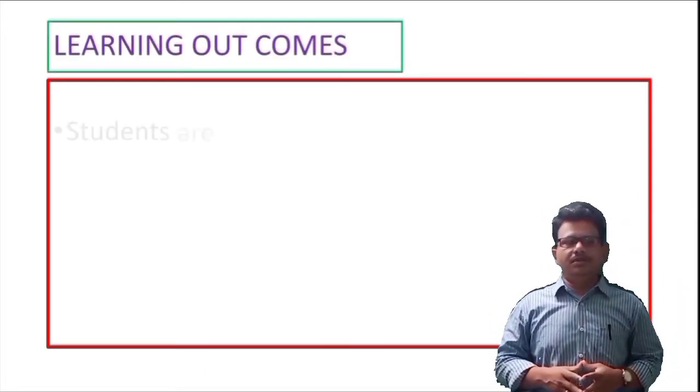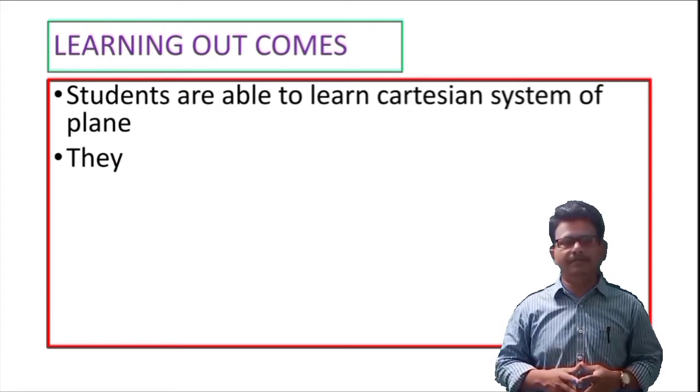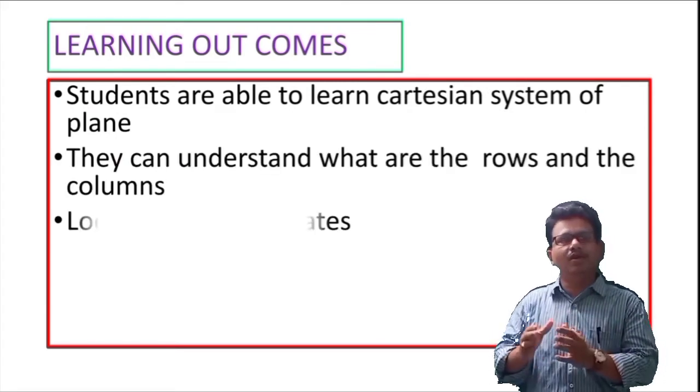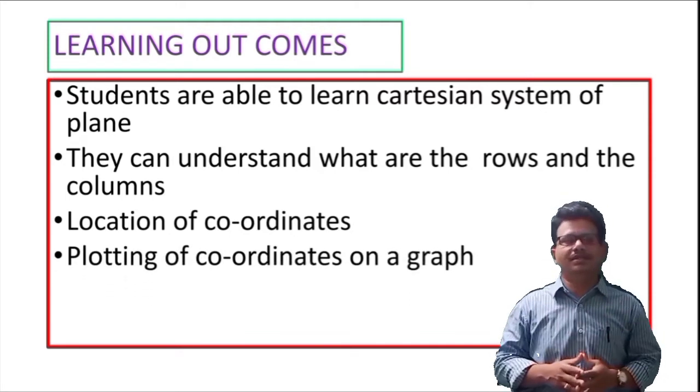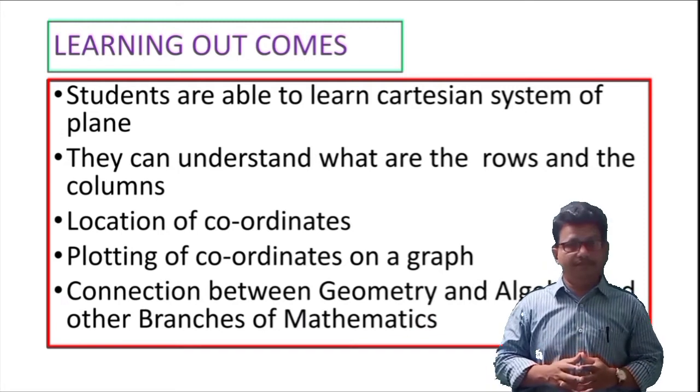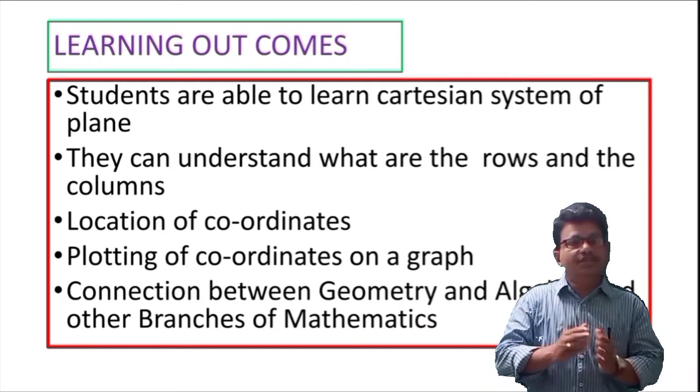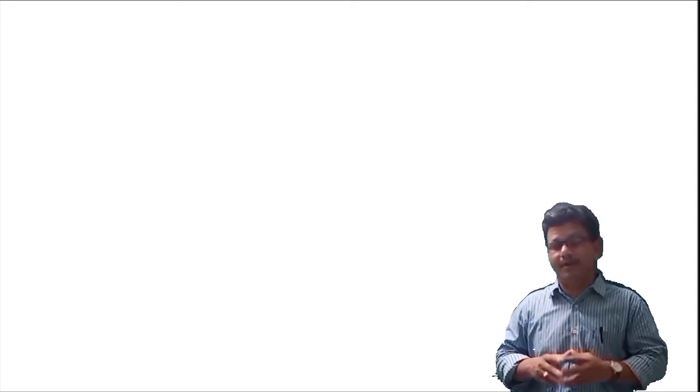Learning Outcomes. Students are able to learn Cartesian system of a plane. They can understand what are the rows and the columns, location of coordinates, plotting of coordinates on a graph, and the connection between geometry and algebra and with other branches of mathematics. Come on let us begin.